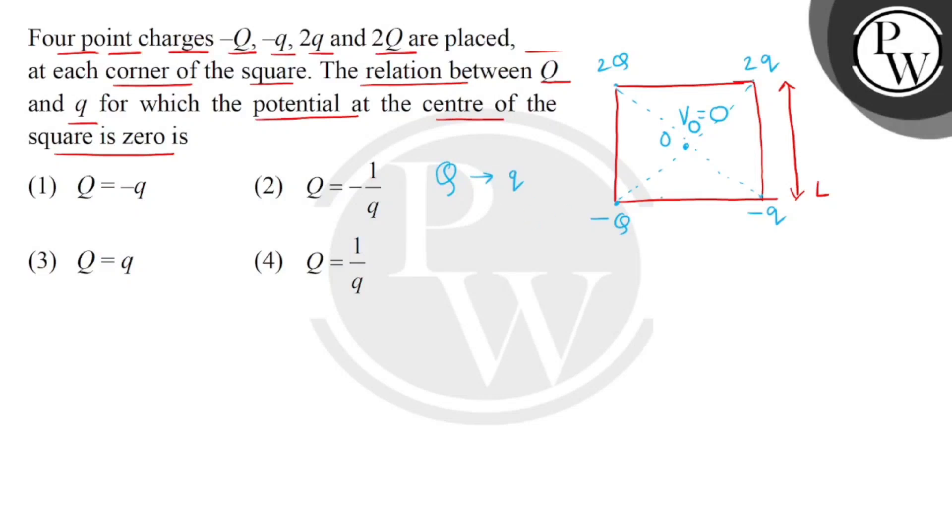So guys, first of all if the side is L, then the length of the diagonal can be found by the use of Pythagorean theorem, which is square root of L square plus L square. So, this is L square root of 2.